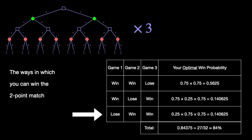This happens with probability 0.14. Alternatively, you may lose the first game but win the next two games, which has also the probability 0.14. In total, your winning probability has increased to slightly above 84% in the two-point match.